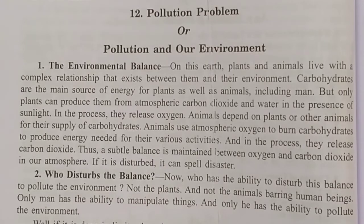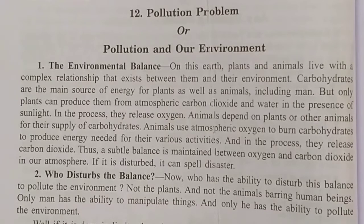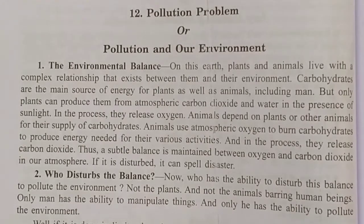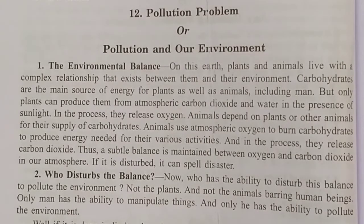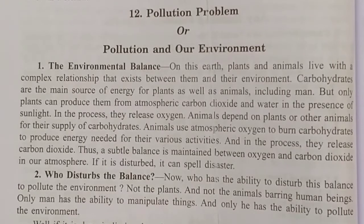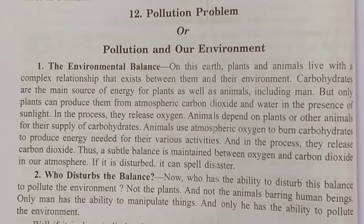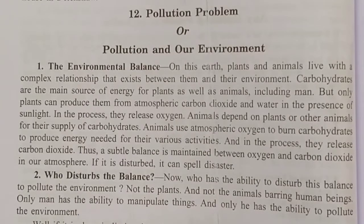Only plants can produce carbohydrates from atmospheric carbon dioxide and water in the presence of sunlight, and in the process they release oxygen. Animals depend on plants or other animals for their supply of carbohydrates, and use atmospheric oxygen to burn carbohydrates to produce energy. In this process they release carbon dioxide. Thus a subtle balance is maintained between oxygen and carbon dioxide in our atmosphere, and if it is disturbed it can spell disaster.